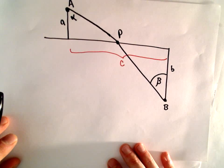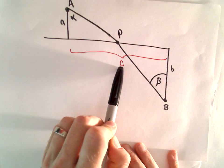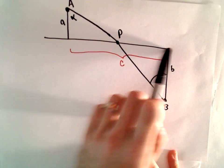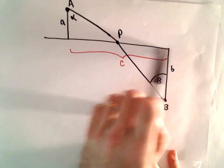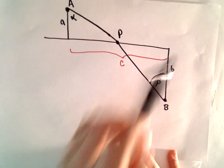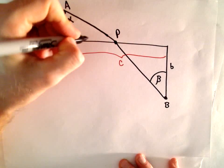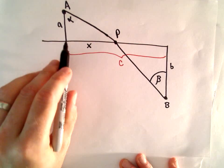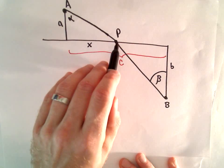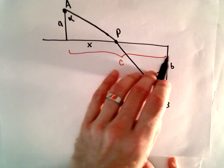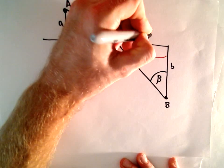Here's the same picture. I've introduced a new constant C, which is the horizontal distance from point A to point B — a fixed length. I'm going to let the variable X be the horizontal distance from point A to P. Then from point P to B, since the entire horizontal length is C, that horizontal distance would be C minus X.